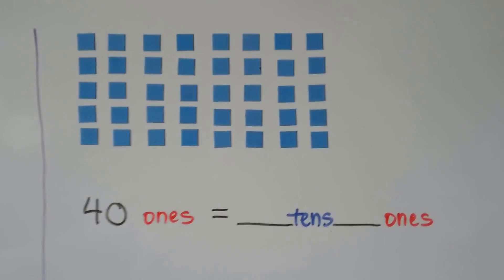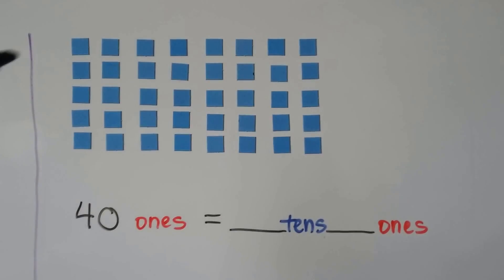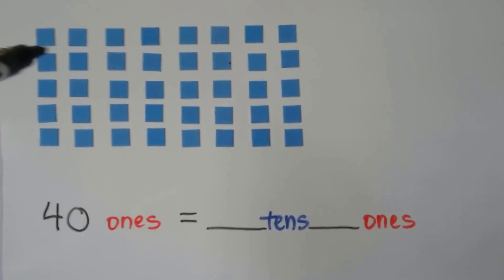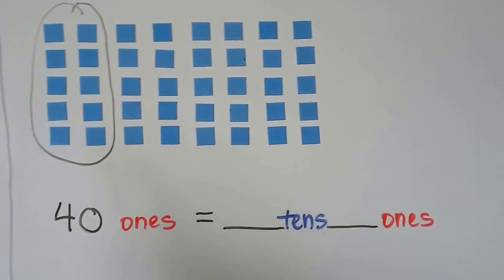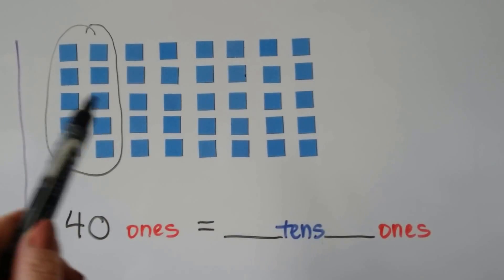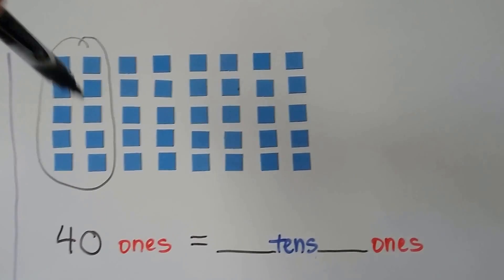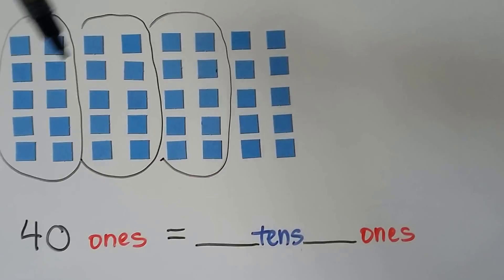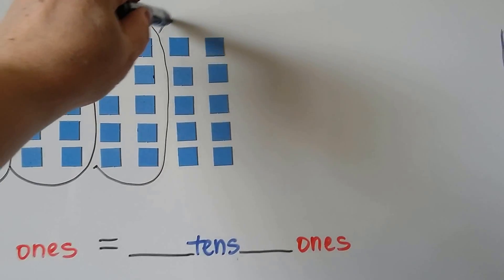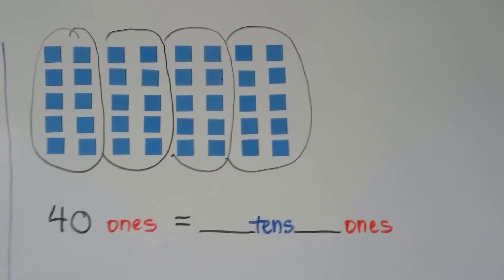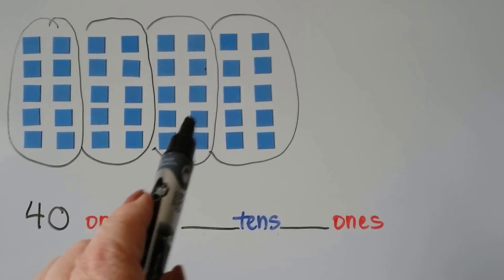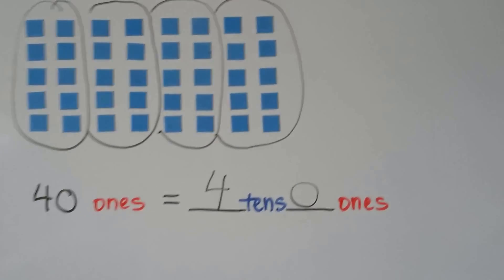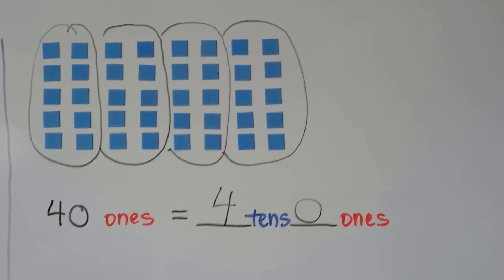Here we've got forty ones. We can make groups of ten: one, two, three, four, five, six, seven, eight, nine, ten — that's one group. Two of these columns make a ten, so we can say that's another ten, and another ten, because two columns are making a ten — we have a five and a five. How many tens do we have? We have one, two, three, four tens. And we have zero ones outside the group.